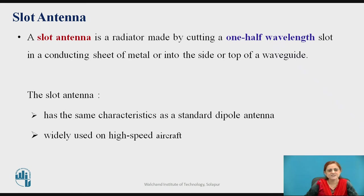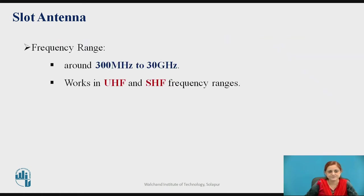Now let us discuss the slot antenna. A slot antenna is a radiator made by cutting a one-half wavelength slot in a conducting sheet of metal or into the side or top of a waveguide. The slot antenna has the same characteristics as that of the standard dipole antenna. It can be widely used in high-speed aircraft applications. The frequency range of the slot antenna is around 300 MHz to 30 GHz, working in the ultra high frequency to super high frequency range.